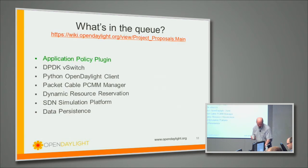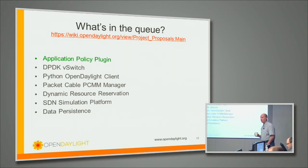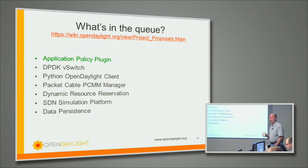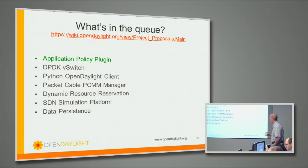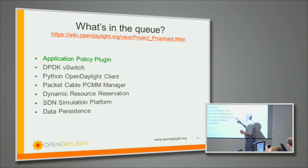What's going to be in Helium? This application policy plugin is something from Dvorkin and Kyle at their new company over at Cisco. That has already been accepted into incubation. DPVK, B-Switch — that's Intel — we're going to have the creation review for that today if they're ready, and we think they are. There are other ones that have just been proposed, including one about how to do other language bindings, like I was mentioning earlier.